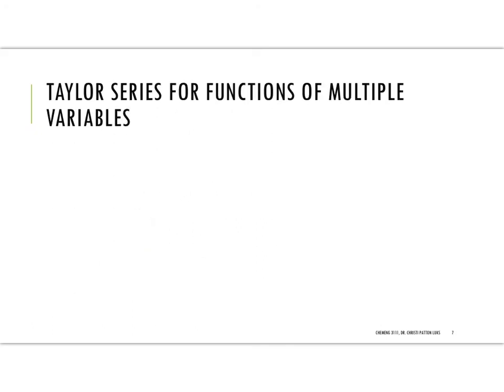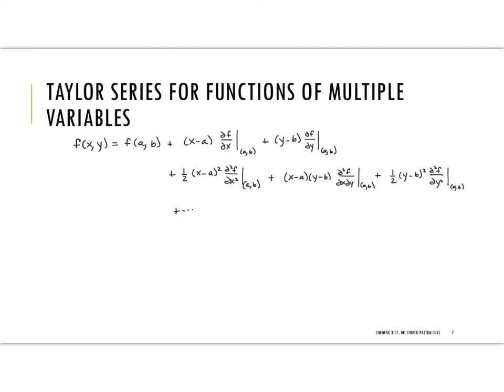So our last little concern here is that a lot of times we have functions that are functions of multiple variables. And so we can just simply have an extended form of the Taylor series. For our function of two variables, we would say that f of x, y is going to be the original function evaluated at that fixed point a, b in this case, plus...